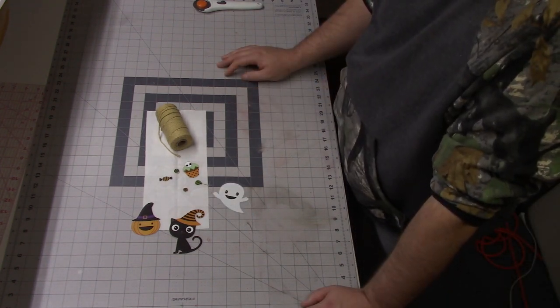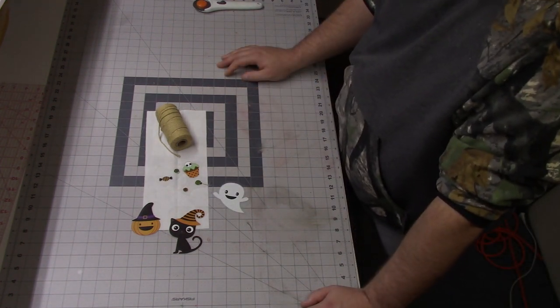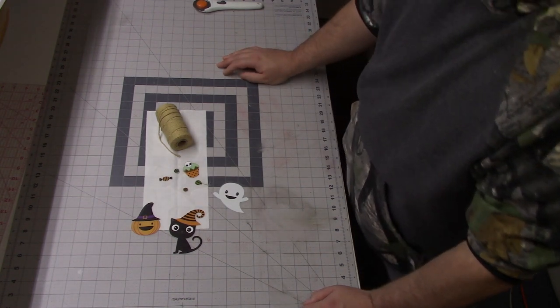I'll also be using my sewing machine with matching thread. Today I'll just be using black, and my iron and ironing board. So let's get started.